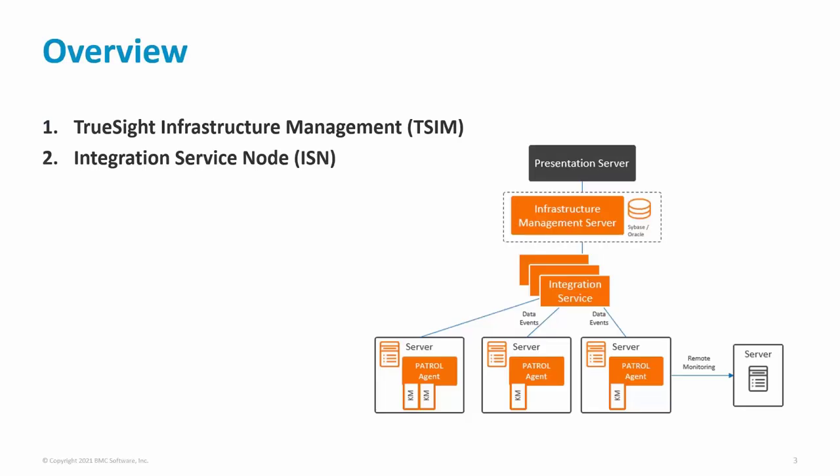Here is an architecture slide. Where exactly is the cell? There will be a cell on the infrastructure management server. It will also be on the integration service node (ISN), if cell was also selected to be installed when installing the ISN. A cell can be installed on any other Windows or Linux server — there does not have to be any other TruSight component on that server for the cell to be installed and function.